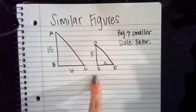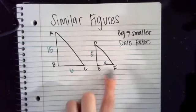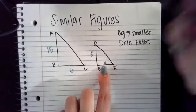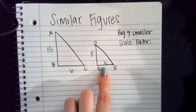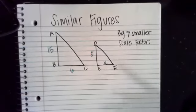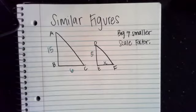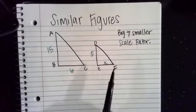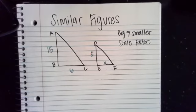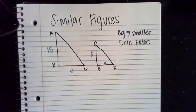By looking at the corresponding sides, we'll be able to figure out what is the missing piece that we're looking for. They put X here. We're trying to figure out what is the length of this side of the triangle, and we'll be able to use the scale factor to determine what that is. To solve for this missing side, they want to know what is the length of EF, this part of the triangle.